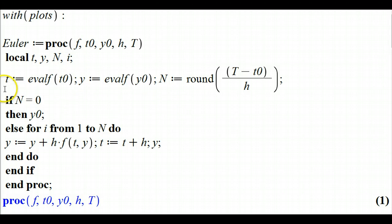So we define initially t to be the initial value, and this eval f will round that to a decimal number if it's, for instance, a square root or something. Similar for y, we're defining that to be the initial y value.